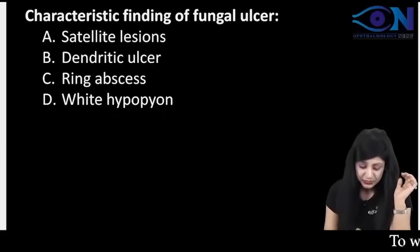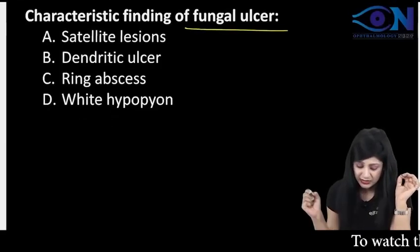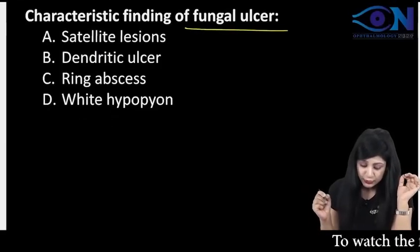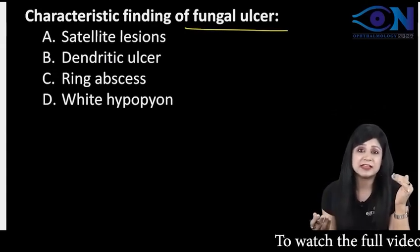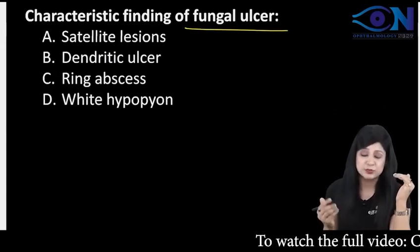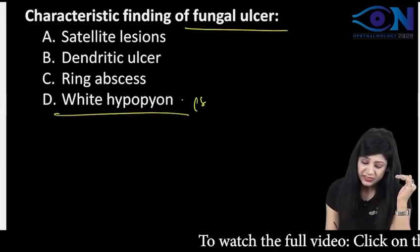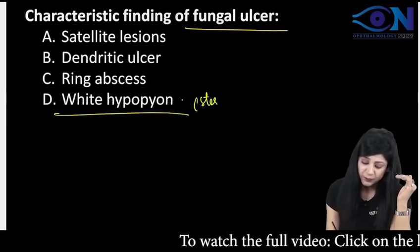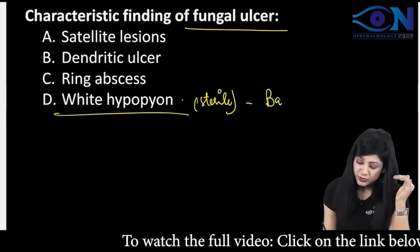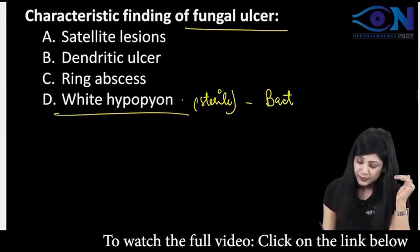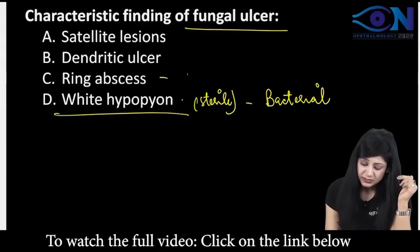Coming to the next question on the characteristic finding of the fungal ulcer. By the diagnosis of exclusion, hypopion — white hypopion means sterile hypopion. Sterile hypopion is a feature of the bacterial corneal ulcer, ring abscess.